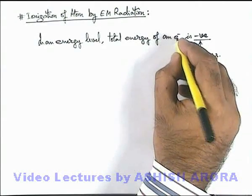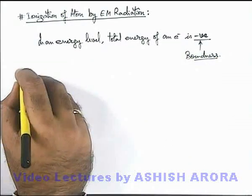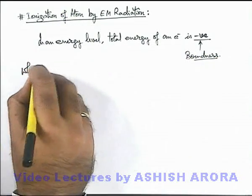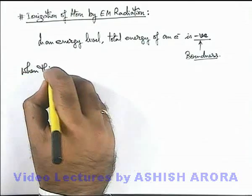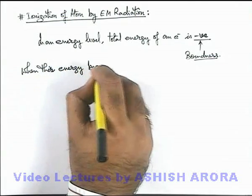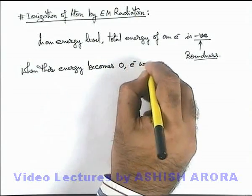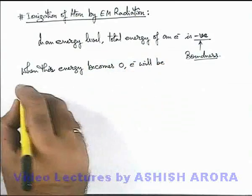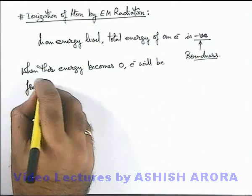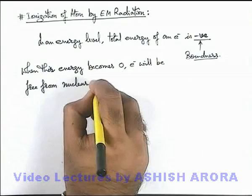Now in this situation, as the electron is bounded by the attraction of nucleus, we can state that when this energy becomes zero, the electron will be free from nuclear attraction.